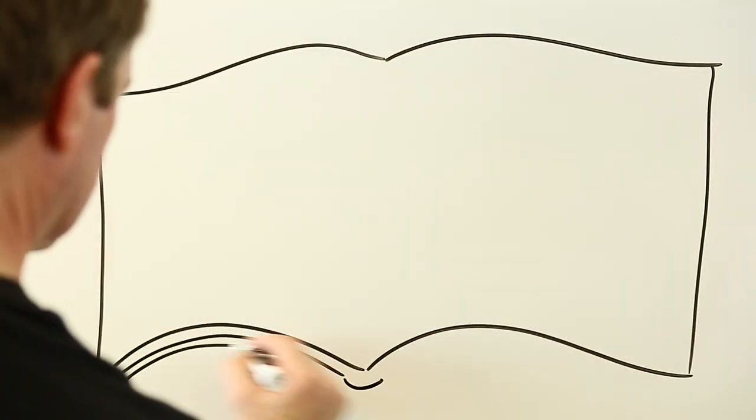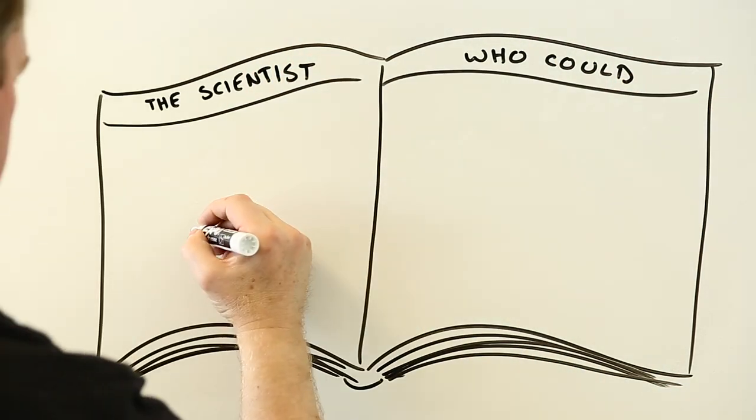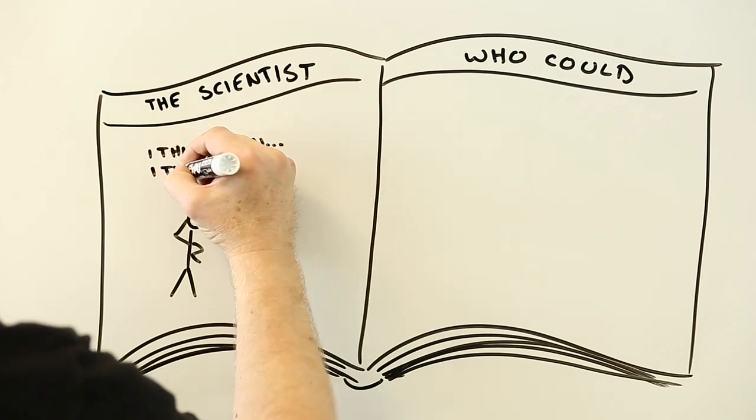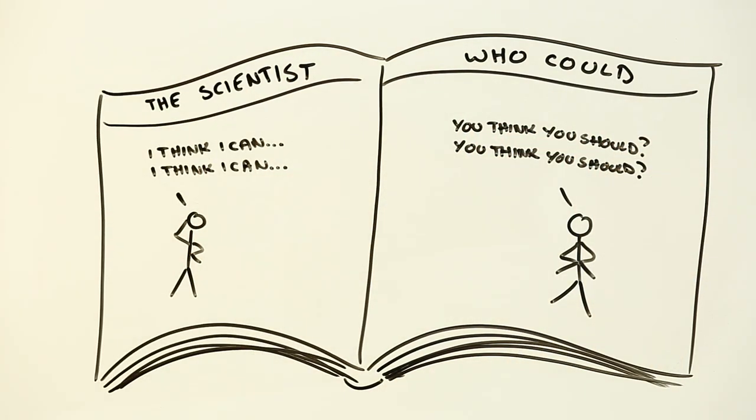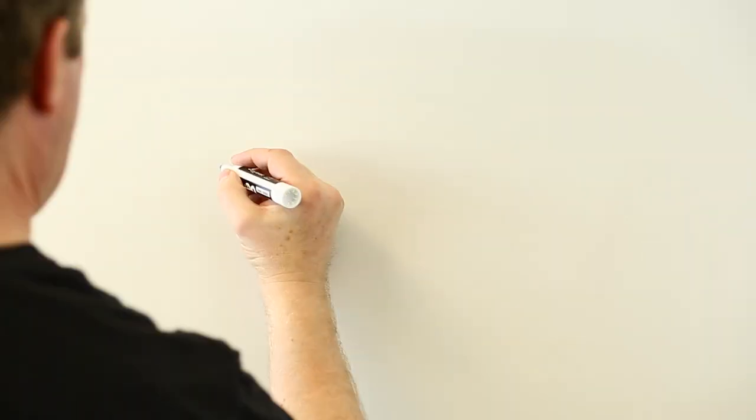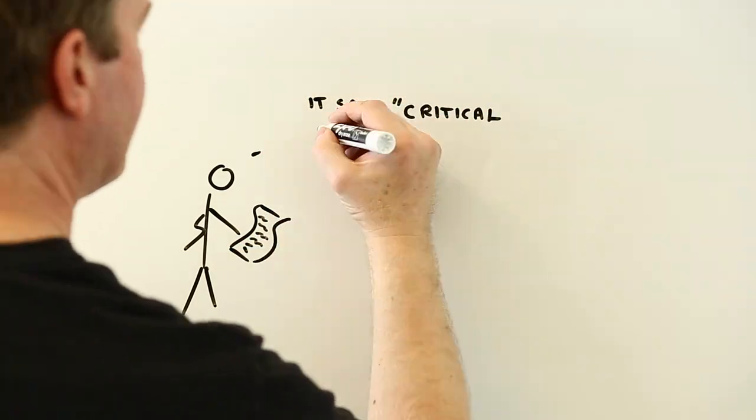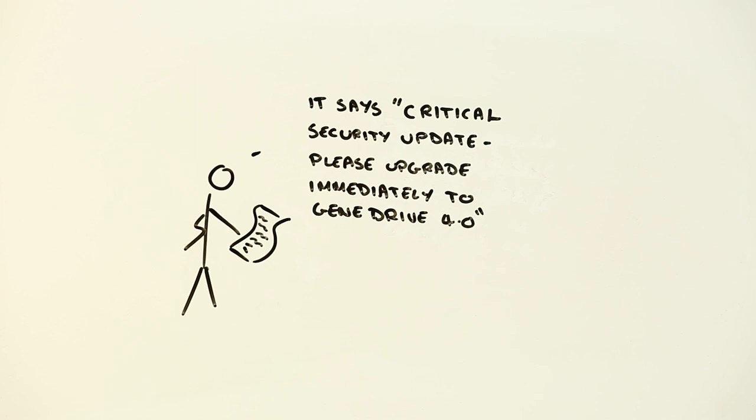Because of concerns like these, scientists have already started to think about how gene drives might get out of hand. Recommendations are beginning to emerge on responsible practices like testing gene drives in the lab before trying them out in the environment. And there's talk of countermeasures such as follow-on gene drives that can reverse changes or block the propagation of genetic modifications.